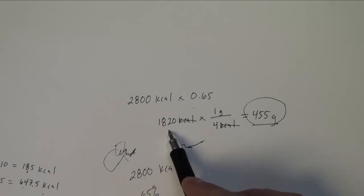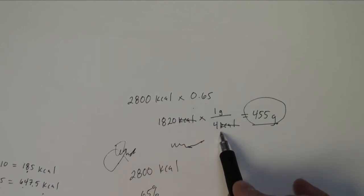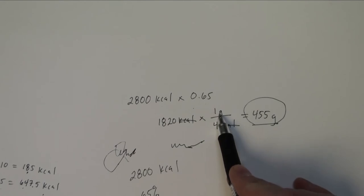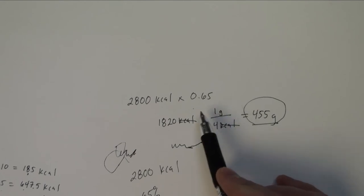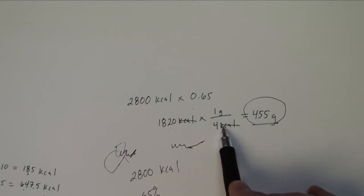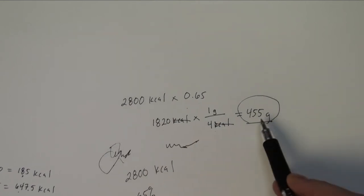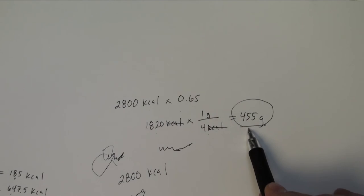Now carbohydrates, just like the proteins that we had talked about, there are 4 kilocalories per gram. So I'm going to essentially do the same type of math. My kilocalories will cross out here when I set up this little proportion or this little math equation, and I will end up with 455 grams.